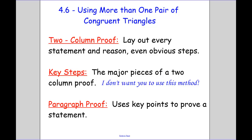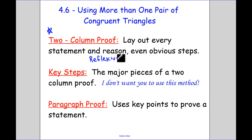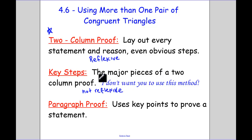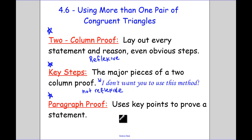What we have been doing so far is the two-column proof, and a two-column proof lays out each statement and reason, even obvious steps like reflexive. Key steps are the major pieces of a two-column proof — basically not reflexive. Even though the book directions may say use key steps, I don't want you to use this method. Instead, we're going to use key steps to write a paragraph proof. A paragraph proof uses key points to prove a statement — we write a paragraph using our key steps and our reasons instead of a two-column proof.